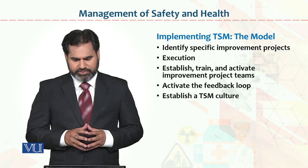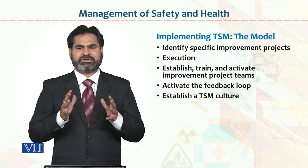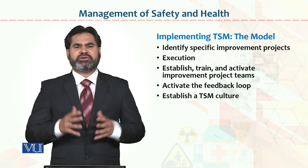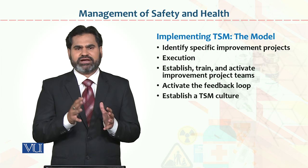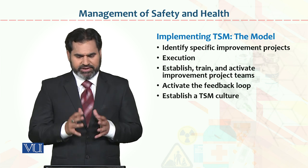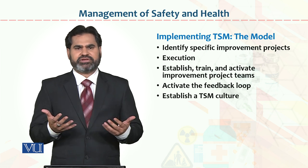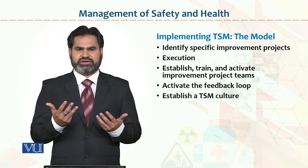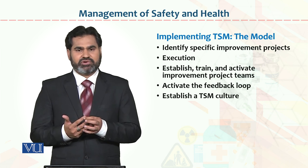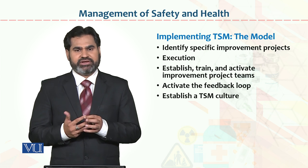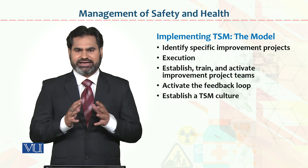Identify specific improvement projects — identify the specific projects in the organization, set examples, and implement them at the top level. Then execute those things that are part of the paperwork — implement them. Establish, train, and activate improvement project teams. Three things are needed: number one, establish the team; number two, train them; number three, motivate and activate them. Until your team members are active, you cannot achieve your desired goals.